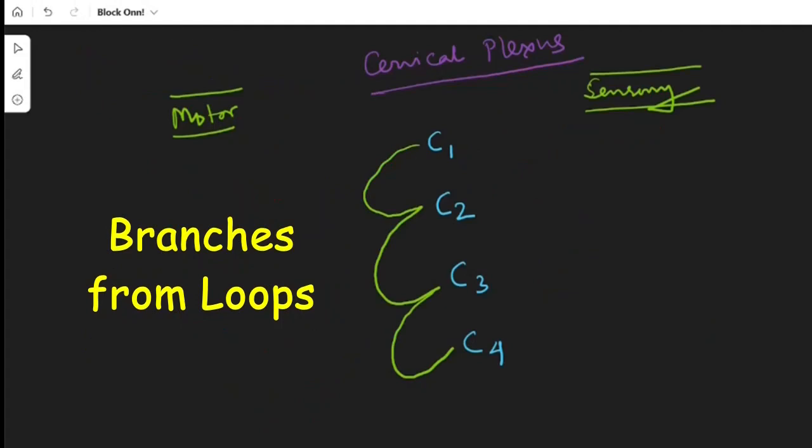Now the last part, that is branches from the loops. We can divide it into sensory branches and the motor branches. The sensory branches are again three in number. From C2 and C3, one is greater auricular nerve and another one is transverse cervical nerve. And from C3 and C4, supraclavicular nerve.